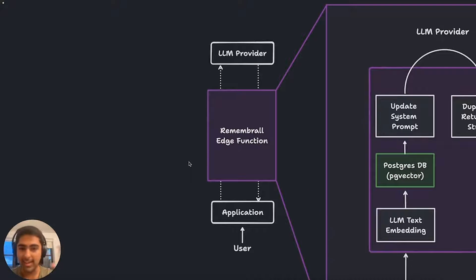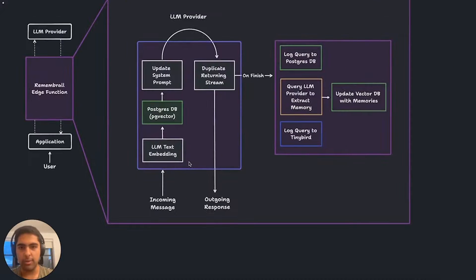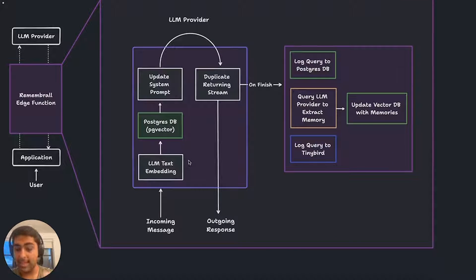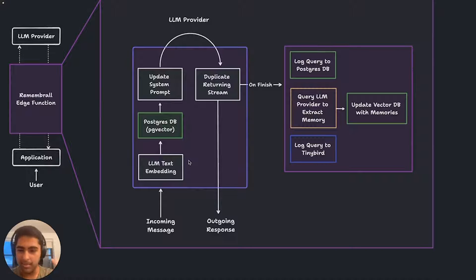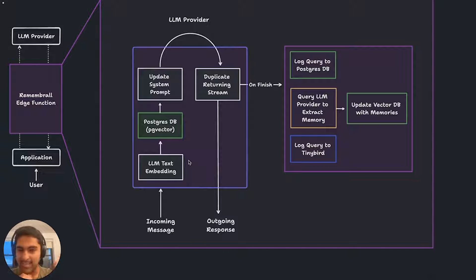Let's break down what's going on inside of this edge function. The incoming message comes in, and the first thing we do is calculate a text embedding for that message — a vector representing the approximate meaning of the text the user entered. Then we make a lookup in a vector database — I'm using Postgres — and pull all of the most relevant memories associated with that user, things I should remember, and pull those out from the database. Then I add that context to the prompt that is sent to the LLM provider.